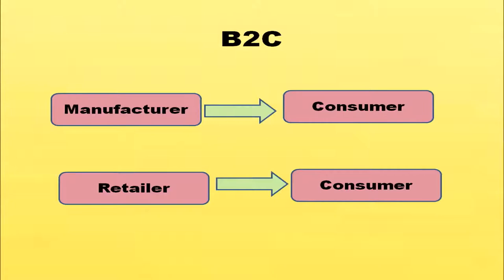B-to-C refers to interaction between business and consumers. Any type of business unit — either a manufacturer or retailer — can interact with consumers. So interaction can be between manufacturer and consumer, or retailer and consumer, in the case of business-to-consumer commerce. C-to-C means two parties are consumer and consumer — one consumer interacting with another consumer.